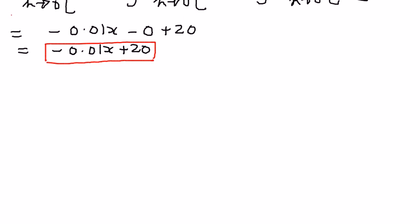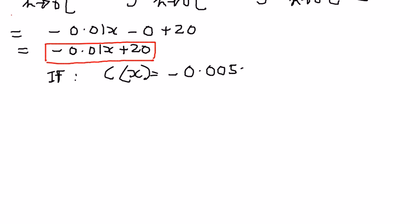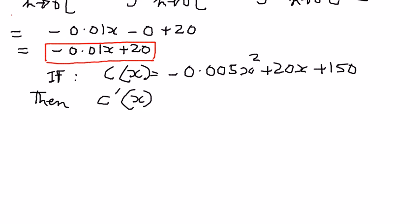So if the given function is c of x equals negative 0.005x squared plus 20x plus 150, then the derivative is c prime of x equals negative 0.01x plus 20. The problem asks us to find the rate of change of cost with respect to the number of books published when we sell 100, 200, 500, and 1,000 books.